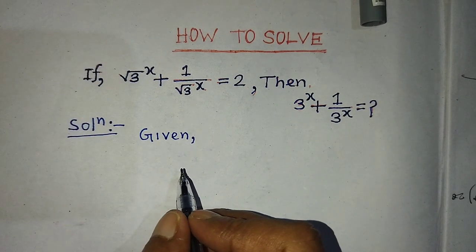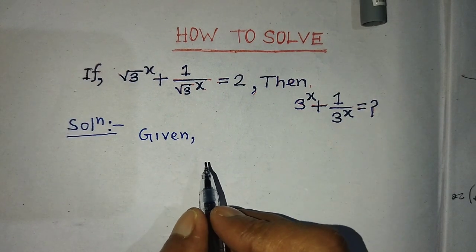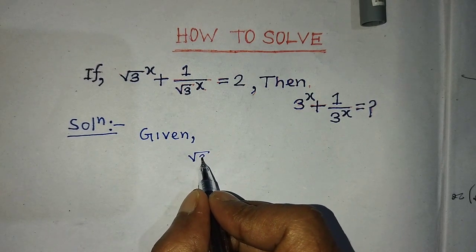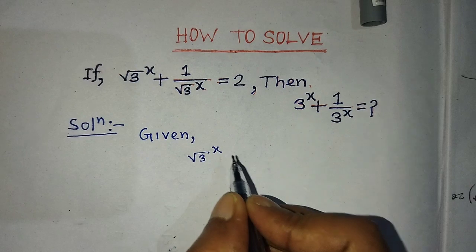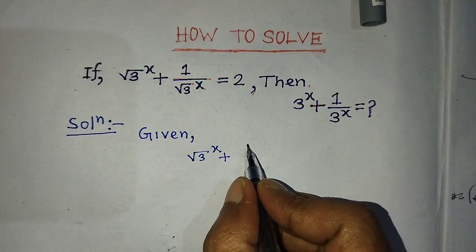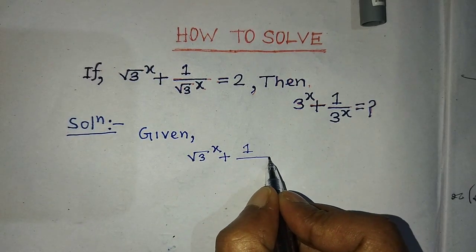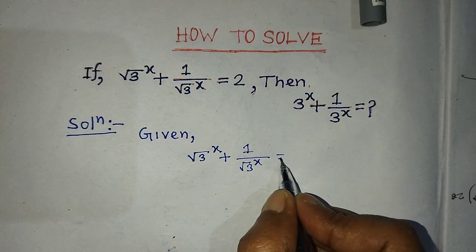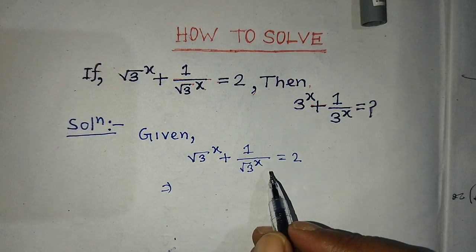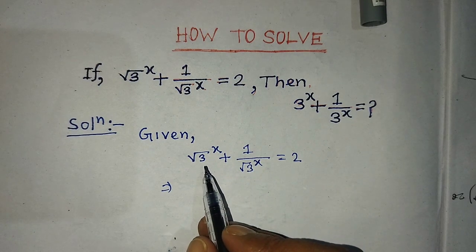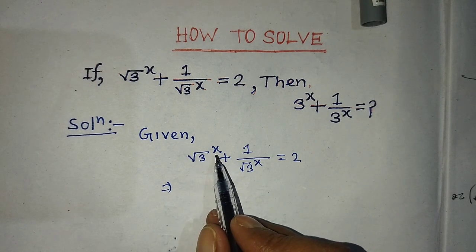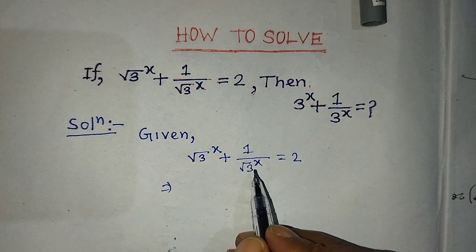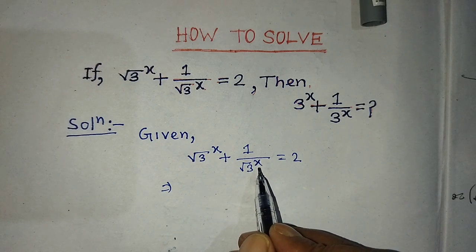Our given algebraic equation is: root over of 3, whole to the power x, plus 1 over root over of 3, whole to the power x, is equal to 2. On the left hand side of this equation, there are two terms. The first term is root over of 3, whole to the power x, and the second term is 1 over root over of 3, whole to the power x.